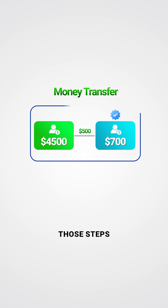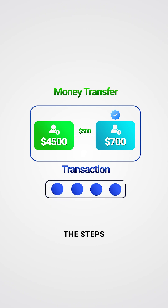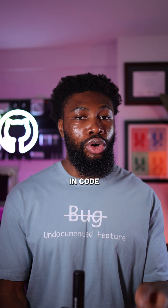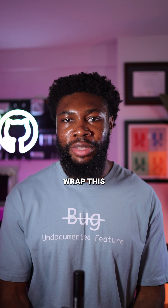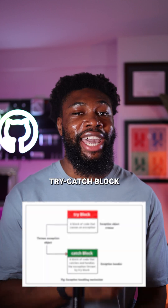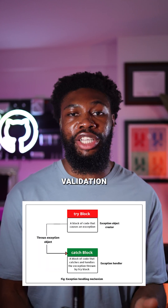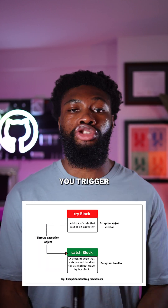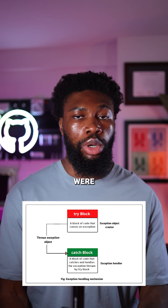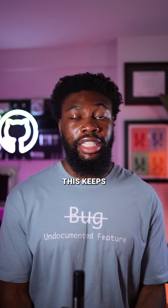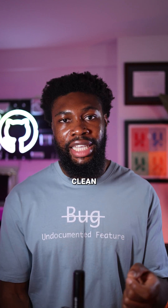Next, you group those steps into a transaction. A transaction wraps the steps together and makes sure they all succeed, or the entire thing is rolled back. In code, you'd usually wrap this logic in a try-catch block. If any step throws an error or fails a validation check, you trigger a rollback to undo whatever changes were already made. This keeps your system clean and avoids partial updates.